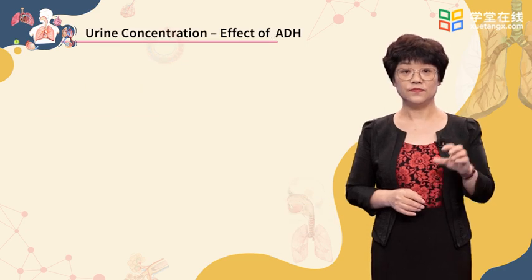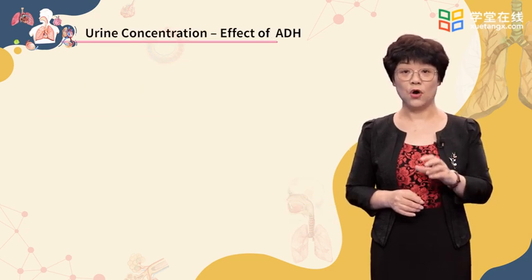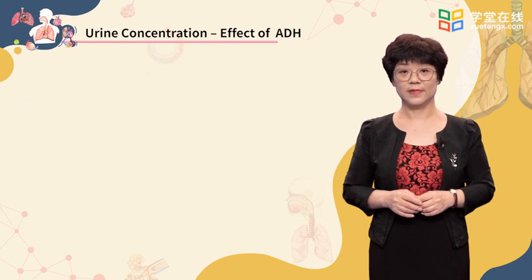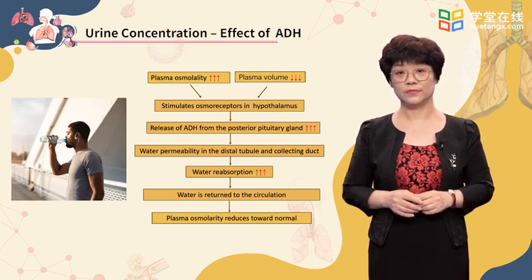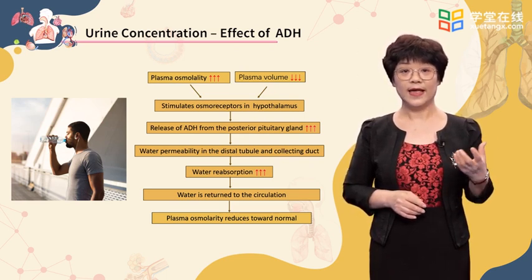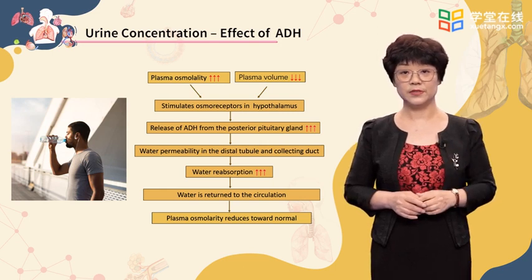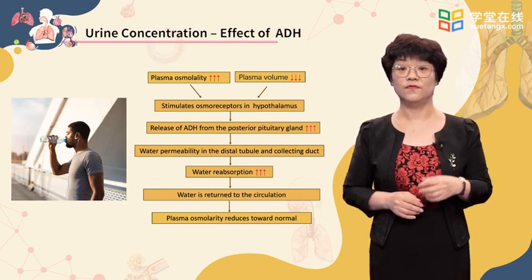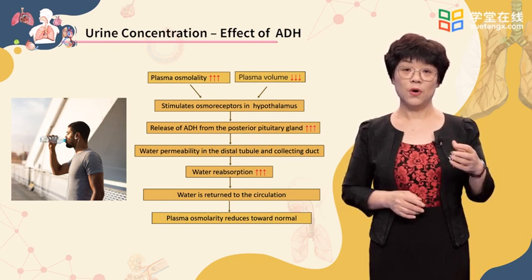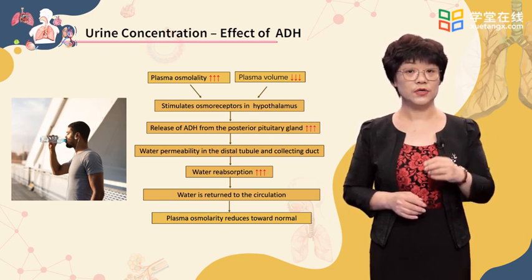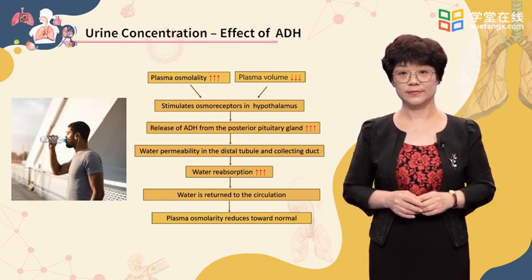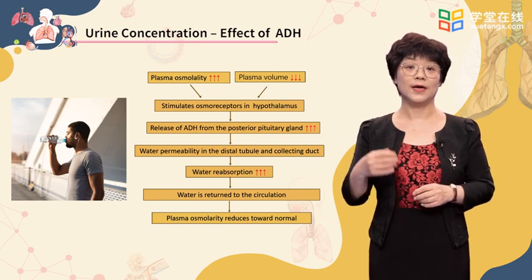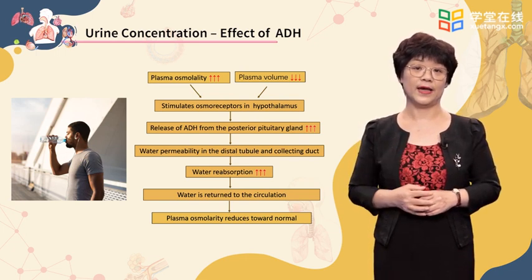Another mechanism involves the antidiuretic hormone, ADH. Osmoreceptors in the hypothalamus cause the release of this hormone. Once released, ADH stimulates water reabsorption in the collecting ducts of the nephrons. Water is returned to the circulatory system to help normalize blood osmolarity. Both the thirst and ADH mechanisms work under the negative feedback principle.